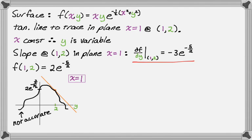So in this plane, in the plane x equals one, I can write the equation of the tangent line. And it's going to be y is the independent variable and z is the dependent variable. So it's going to look like in point-slope form, z minus the z-coordinate equals the slope, which we calculated, and then y minus the y-coordinate, so y minus 2.